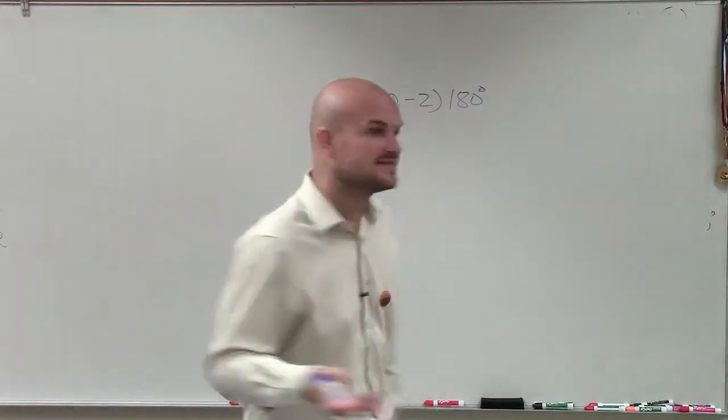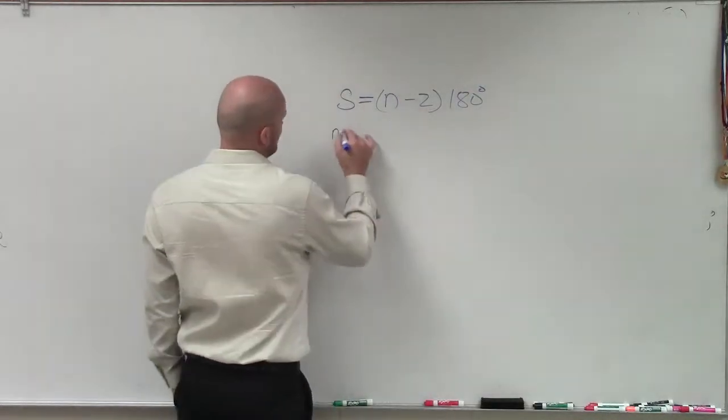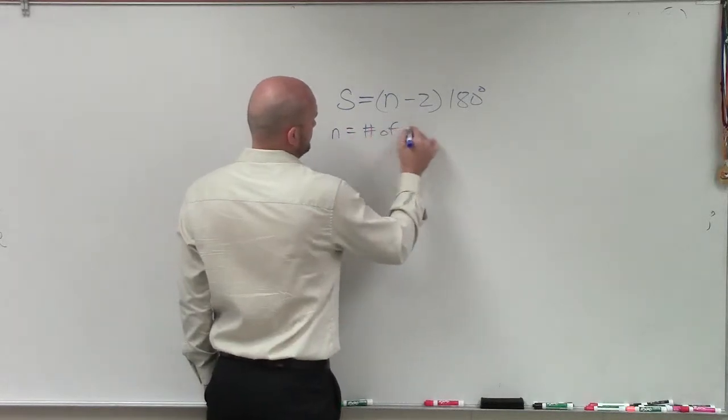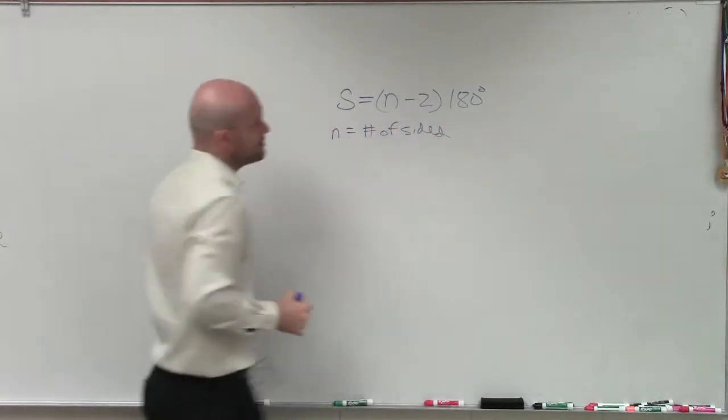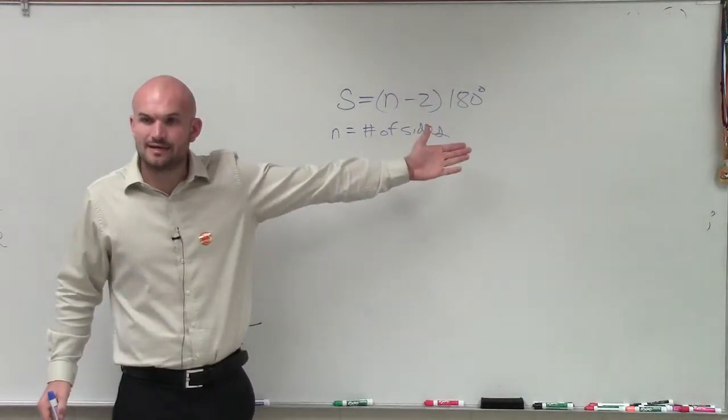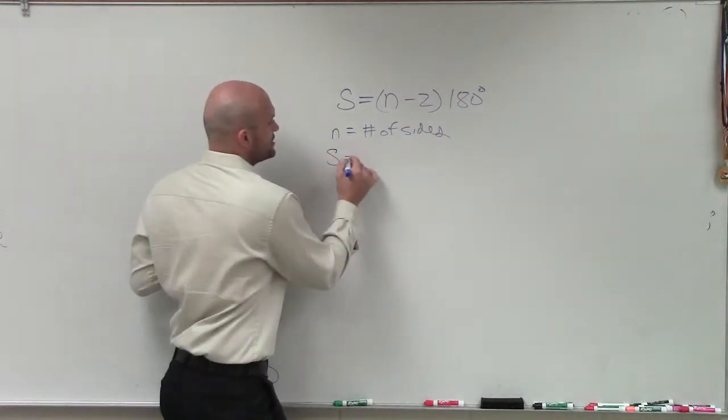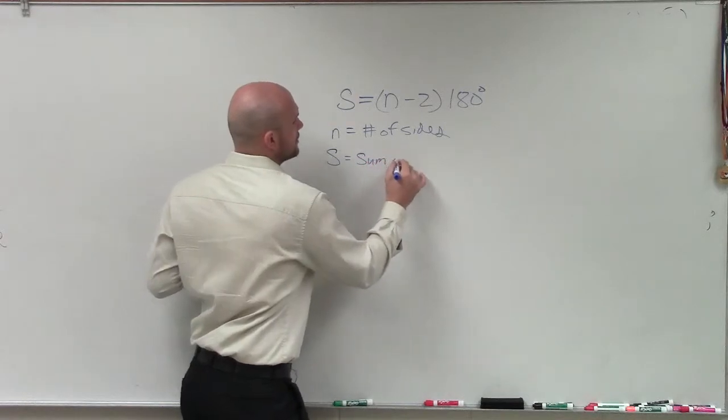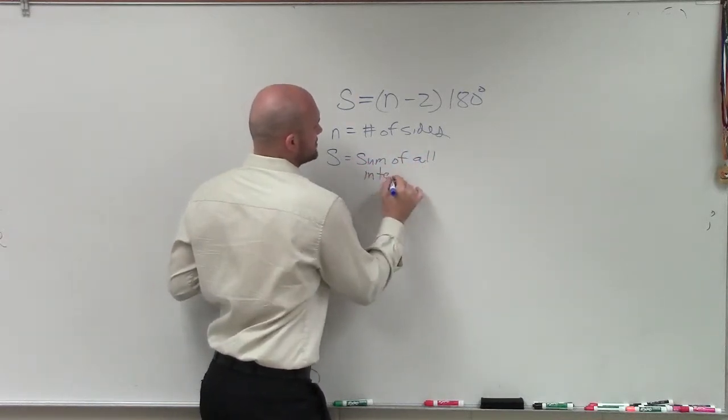So what you could do is take the number of sides, which we said was n. So n equaled the number of sides. So if you do that minus 2 times 180, that equals S, which is the sum of all interior angles.